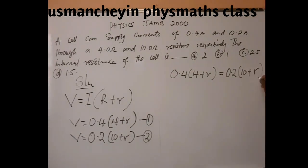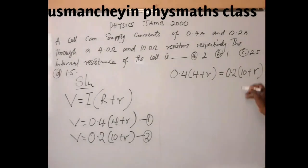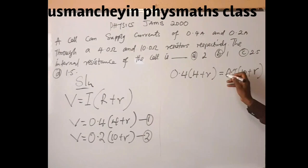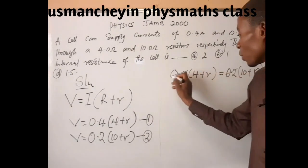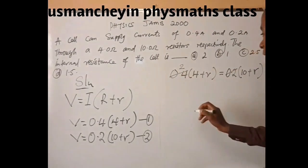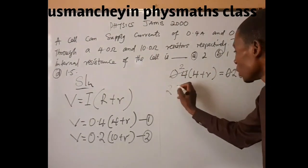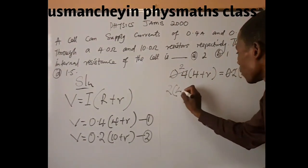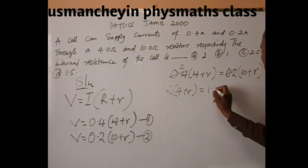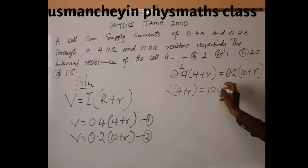From here, 0.2 goes into 0.2 is 1 times, 0.2 goes into 0.4 is 2 times. So we have 2 into (4 plus R) equals (10 plus R). Opening the bracket, we have 8 plus 2R equals 10 plus R.